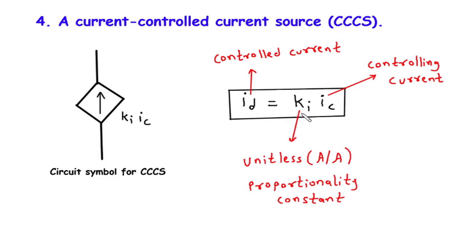By adjusting the value of K, we can achieve different levels of control and amplification. The unitless nature of K is significant because it means the proportionality constant is independent of the specific units of current used in the circuit. Regardless of whether we're working with milliamperes, amperes, or any other unit of current, K remains the same. It represents a pure ratio or scaling factor that defines the relationship between the controlling current and the controlled current.